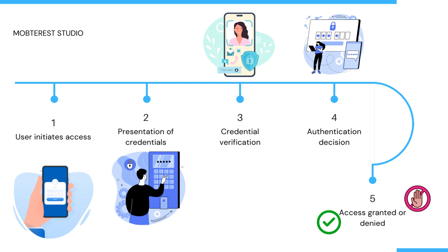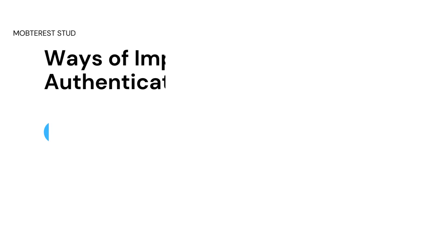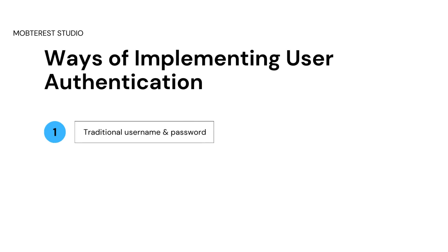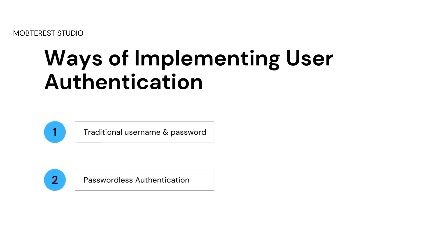There are several ways of implementing user authentication in mobile apps. We have traditional username and password authentication, which is the most common method and involves using a combination of a username — which could also be an email — and password. Next, we have passwordless authentication, which eliminates the need for traditional passwords.